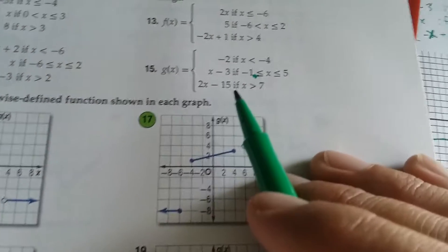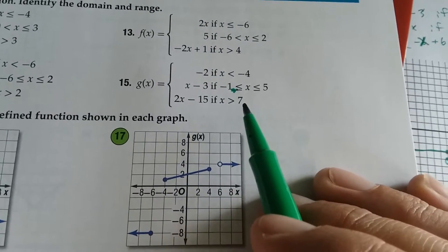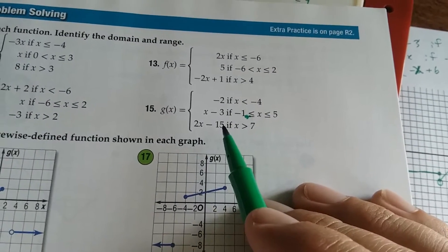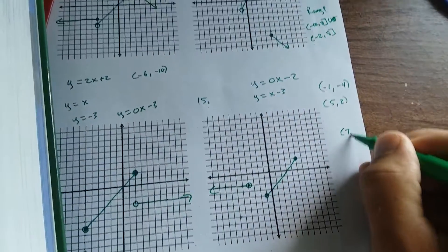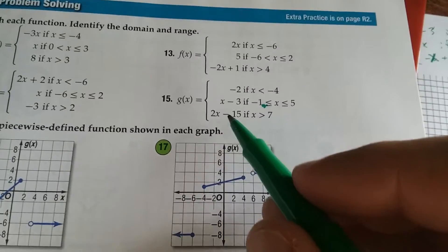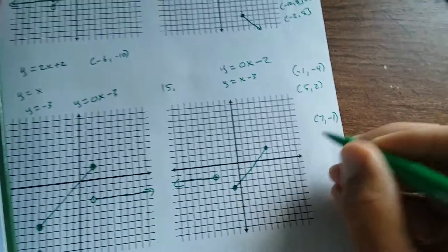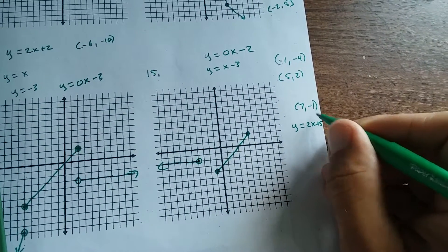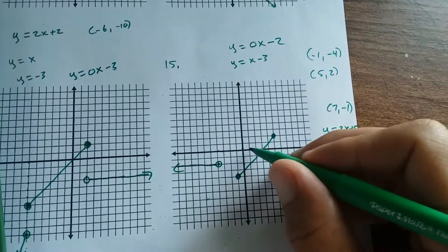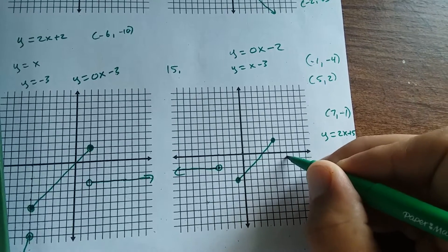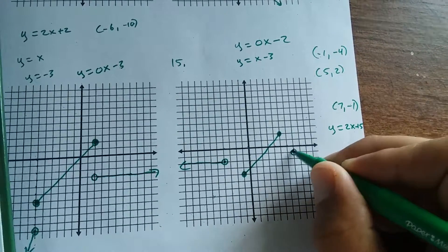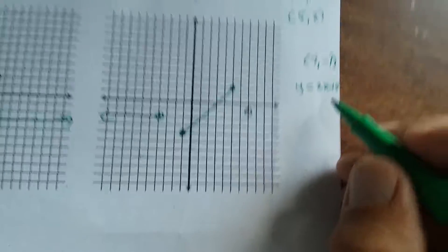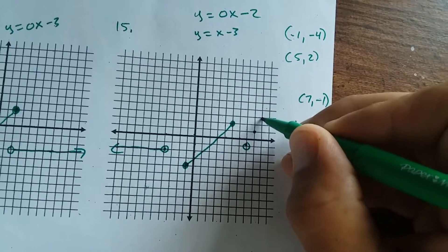The third piece is 2x minus 15 when x is greater than 7. Plugging in 7: 2 times 7 is 14, minus 15 is negative 1, so the endpoint is (7, negative 1). It's an open circle because we don't have the equal bar. Your slope is 2, meaning up 2 over 1.